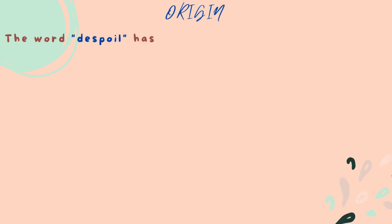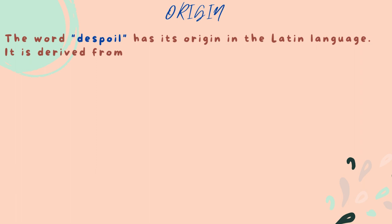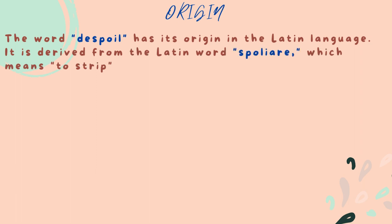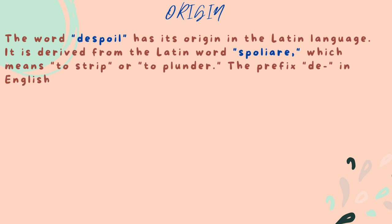Despoil often implies the act of taking away or damaging what rightfully belongs to someone or something, resulting in a state of loss or deterioration. Origin: The word despoil has its origin in the Latin language. It is derived from the Latin word spolaire, which means to strip or to plunder.